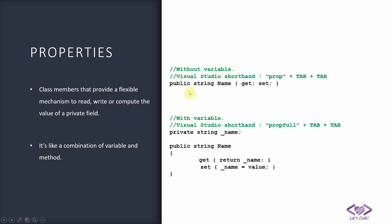One way of writing properties is where you specify the access modifier — public, private, or something else. We normally use public because properties are used to expose data outside the class. Then you specify the data type — string, int, or whatever type you want — similar to variables. Then the name, and we generally use PascalCasing, that is the first letter capitalized and the rest lowercase, which is the naming convention given by Microsoft.